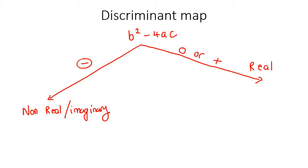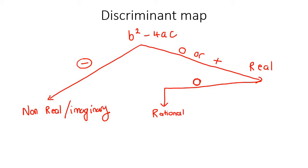Within the real answers, there are different categories. If your discriminant was exactly zero, then your roots are rational, equal, and there is only one solution — and obviously also real, because anything going down this path is real.